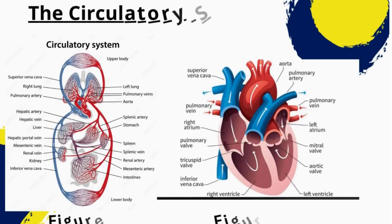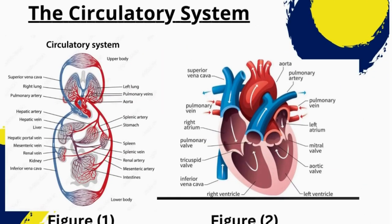Just have a closer look at the diagrams here. Figure 1 shows how oxygenated blood and deoxygenated blood flow through our body. Figure 2 shows the labeled diagram of the human heart.